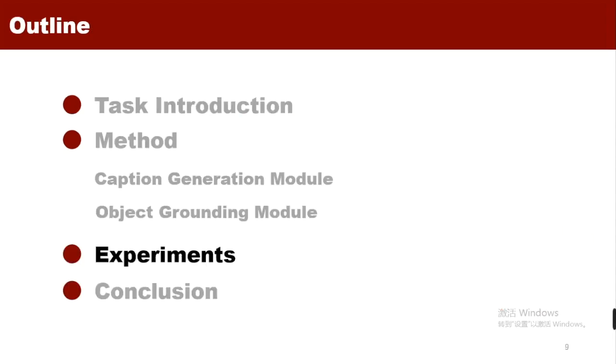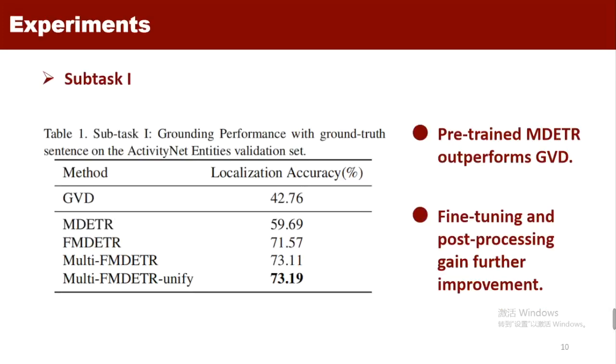I will present our experiments. For subtask 1, we evaluate our grounding module with localization accuracy on validation set from ActivityNet Entities. MDETR provides a much stronger baseline compared with GVD as the localization accuracy is improved to 59.69 even without fine-tuning. After fine-tuning and post-processing, the performance is improved to 73.19.